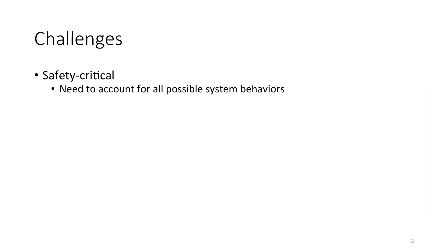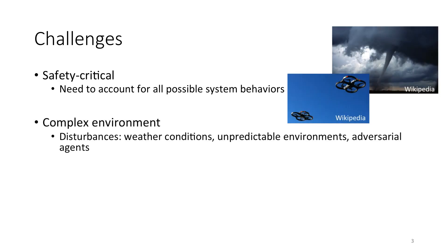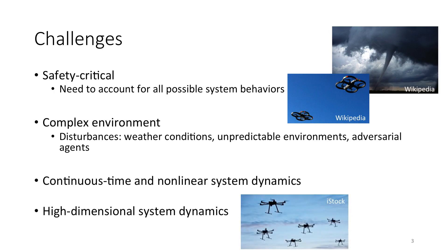Safety-critical systems are generally difficult to analyze because we need to be able to account for all possible system behaviors. In addition, the vehicles might operate in complex environments where there are disturbances from weather conditions or even adversarial agents. Furthermore, the vehicles have continuous nonlinear dynamics, and for multiple vehicles, the joint state of all the vehicles is generally of high dimension.